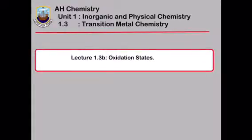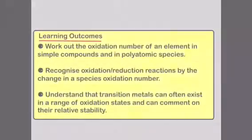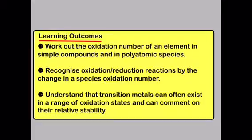In this lecture, we're going to look at the oxidation states of transition metals and other elements as well. By the end of this lecture, you should be able to work out the oxidation number of an element in simple compounds and in polyatomic species. You should also be able to recognise oxidation and reduction reactions by looking at the change in a species' oxidation number. And finally, you should be able to understand that transition metals can often exist in a range of oxidation states and comment on their relative stability.